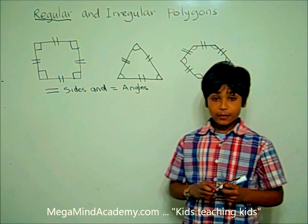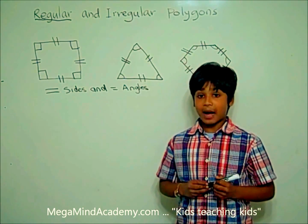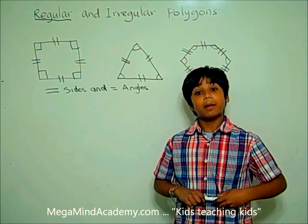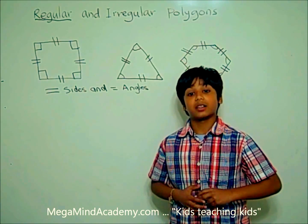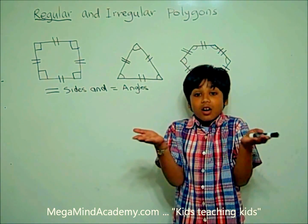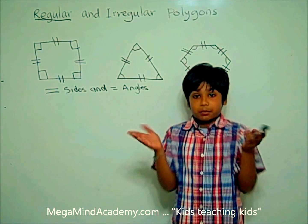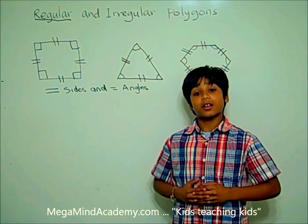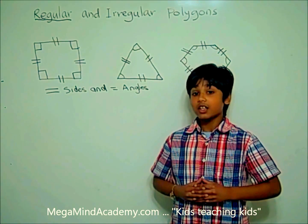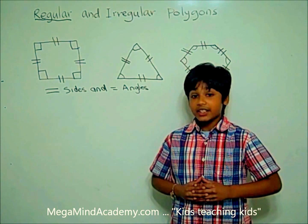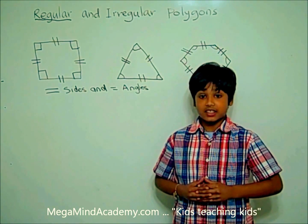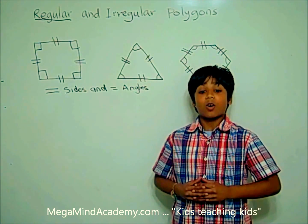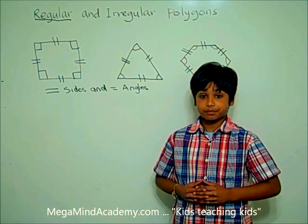Now that we've learned about regular polygons, let's learn about irregular polygons. What are irregular polygons? Irregular polygons are the polygons which either have all the sides not the same, or all the angles not the same.